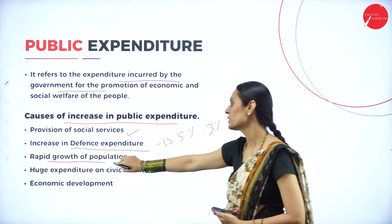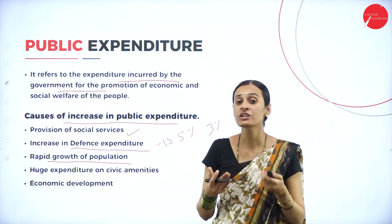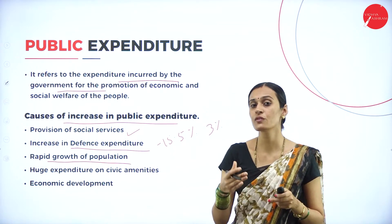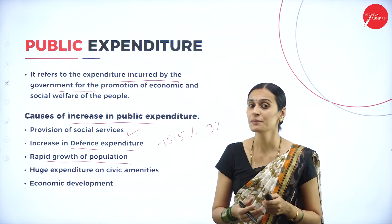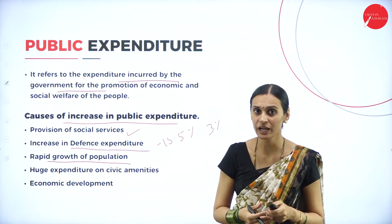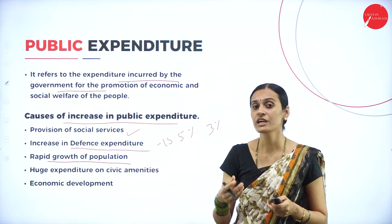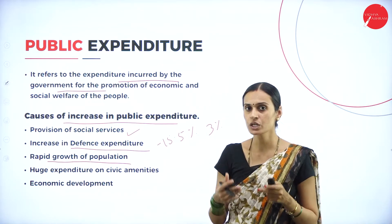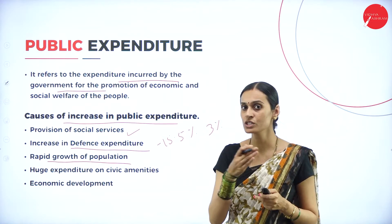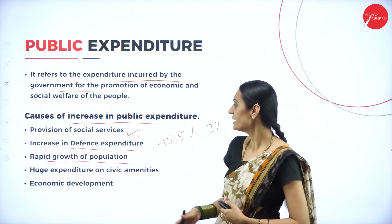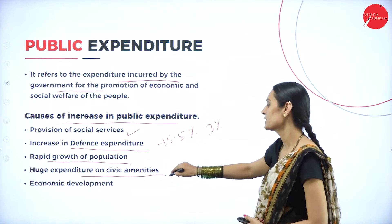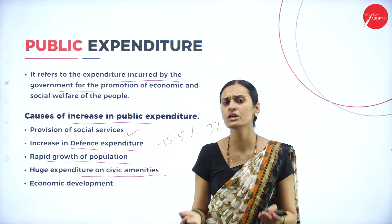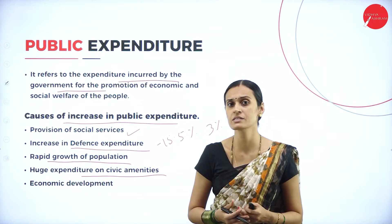The third cause is rapid growth of population. Increasing the population rate creates increasing requirements. The rate of distribution of national income depends upon the population, and increasing population reduces the distribution of resources. The growth of population is a major cause of public expenditure. The fourth cause is huge expenditure on civil amenities — providing services and conducting elections — all of which require large amounts of expenses by the government.